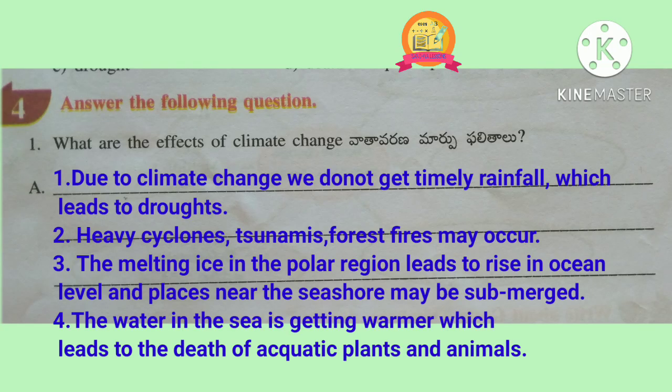Fourth Roman: answer the following question. First question — what are the effects of climate change? Due to climate change, we do not get timely rainfall which leads to droughts. Heavy cyclones, tsunamis, and forest fires may occur. The melting ice in the polar region leads to the rise in ocean level and places near the seashore may be submerged. The water in the sea is getting warmer, which leads to the death of aquatic plants and animals.